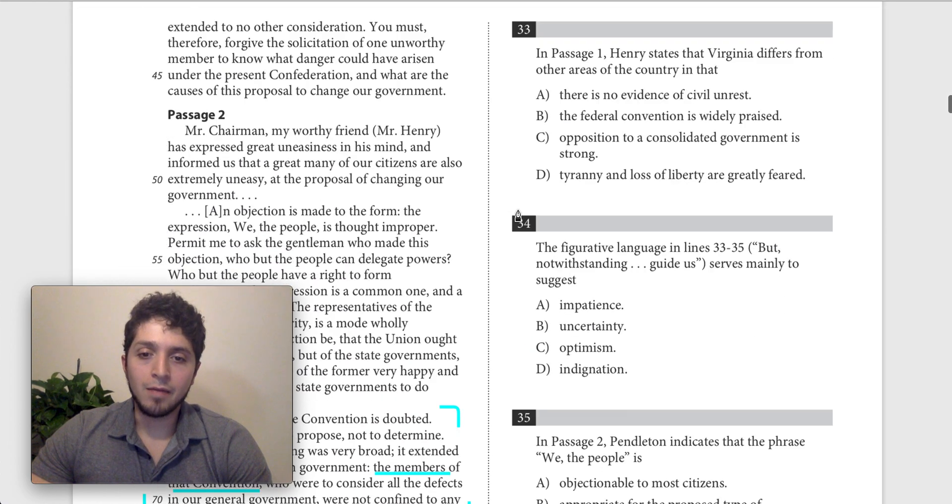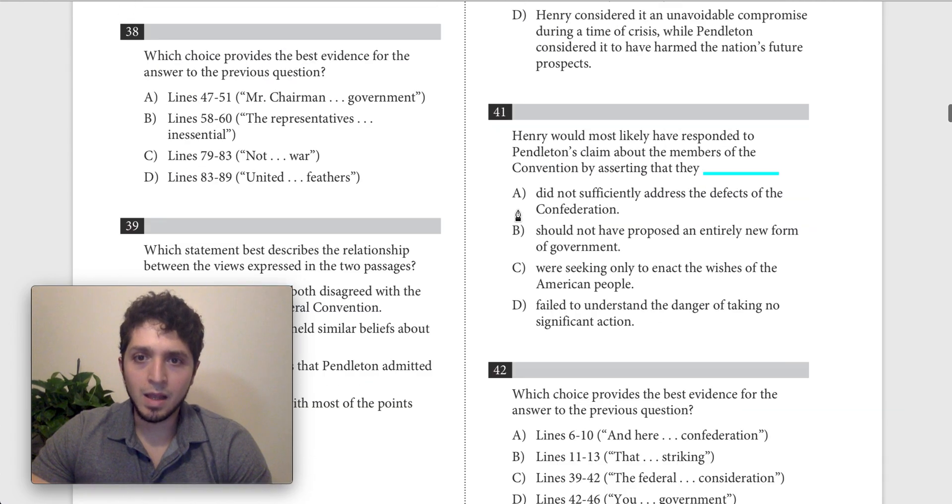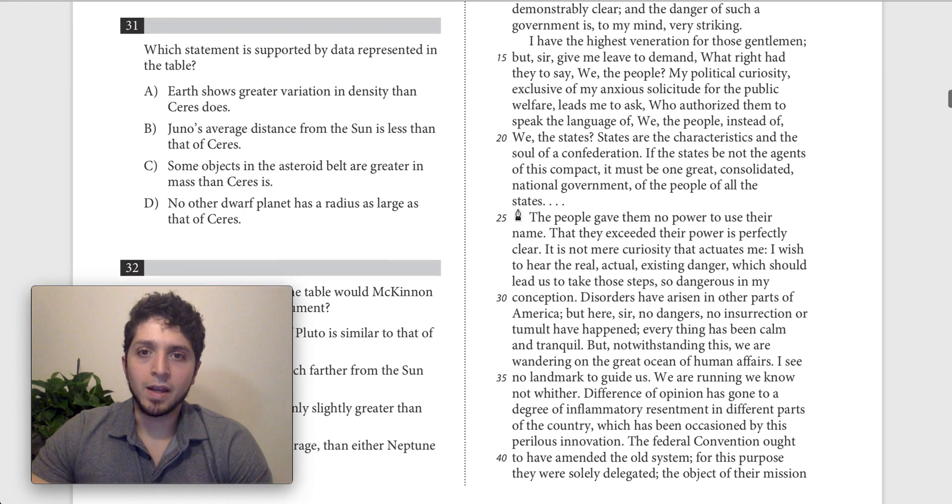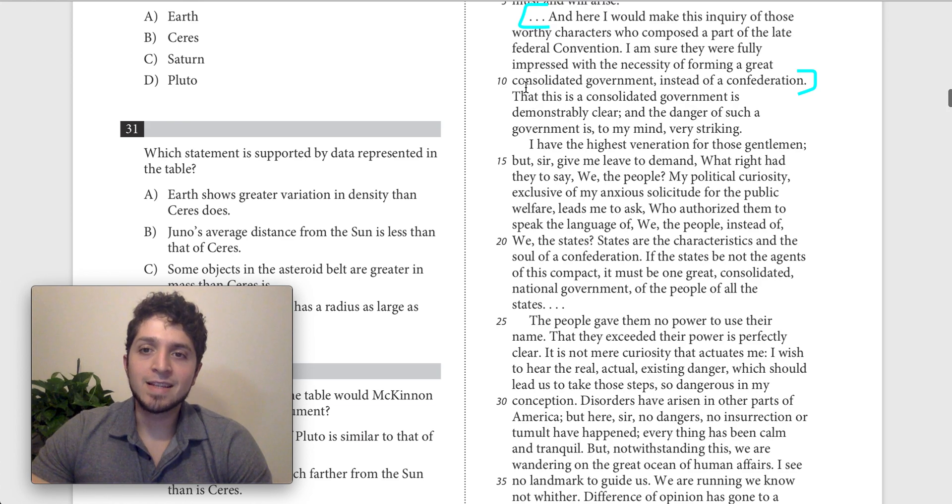The next lines is, I think, 11 through 13, which is right here, and that says that this is a consolidated government. It's demonstrably clear.